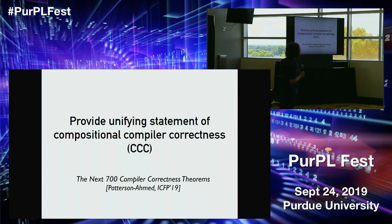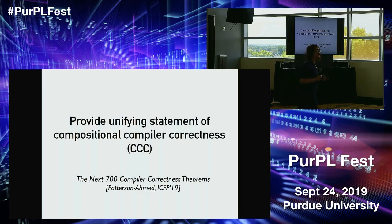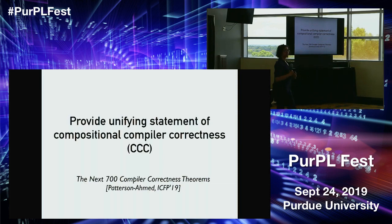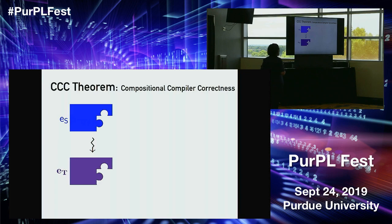This year at ICFP, my student Daniel Patterson and I had a paper called 'The Next 700 Compiler Correctness Theorems.' This was the result of our effort over the last several years trying to understand the pros and cons of all of those compiler correctness results. We gave a unifying statement of compositional compiler correctness — CCC — as a framework where every compositional compiler correctness result should be able to plug in its parameters, and once you've done that, we can learn something useful about their pros and cons.